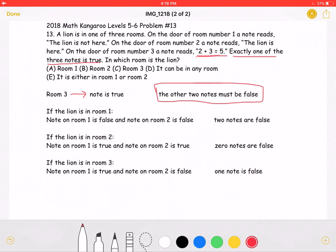Let's start with the scenario that the lion is in room 1. If the lion is in room 1, the note on room 1 that says the lion is not here would be false.